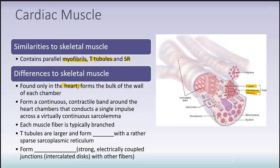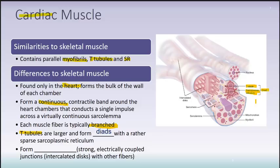Cardiac muscle is only found in the heart — cardiac referring to heart — and forms the bulk of the wall of each chamber. It also forms a continuous contractile band around each of the heart's four chambers, allowing one single nerve impulse to travel throughout the entire muscle for a coordinated contraction. There's branching within the muscle fibers for quick communication between cells. The T-tubules in cardiac muscle are larger and form what are called dyads — a T-tubule and the sarcoplasmic reticulum together — playing an important role in excitation-contraction coupling.